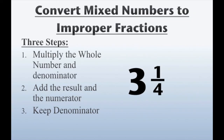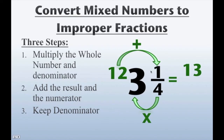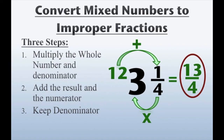So, how do we convert 3 and 1 fourth to an improper fraction? We follow the same exact 3 steps. Step 1: multiply the whole number and the denominator. Our denominator is 4, our whole number is 3 — 4 times 3 gives us 12. Step 2: add the result and the numerator — that's 12 plus 1, and that equals 13. And then step 3, we keep our denominator, which is going to be 4, and our answer is 13 fourths.